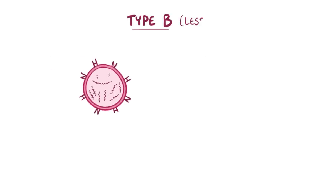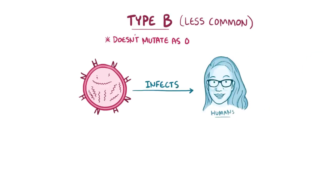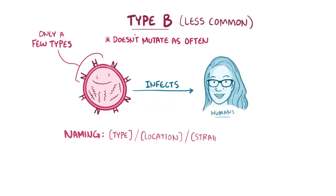Type B influenza is less common, and it only infects humans and doesn't mutate as often as type A. Type B influenza only has a few types of H and N glycoproteins on its surface. Therefore, the naming pattern is similar to type A influenza but without the H and N subtype included at the end, or the host type, since it only infects humans.